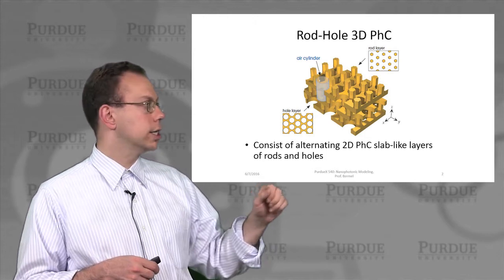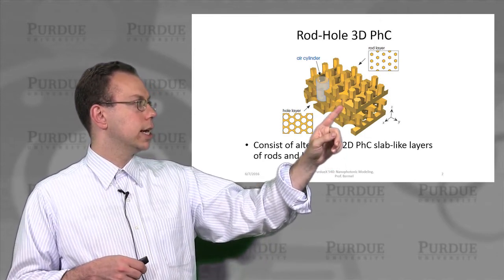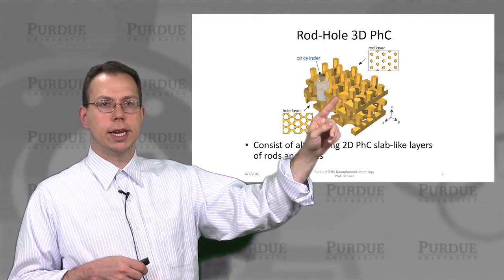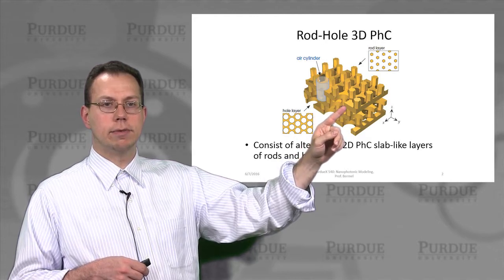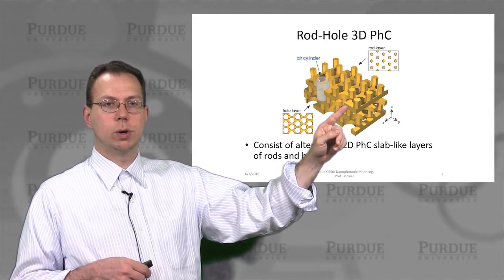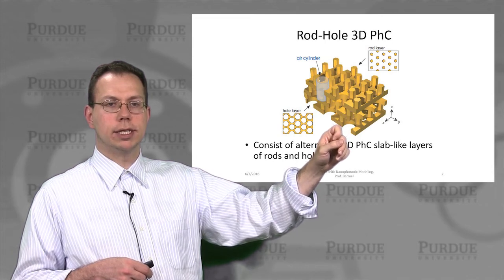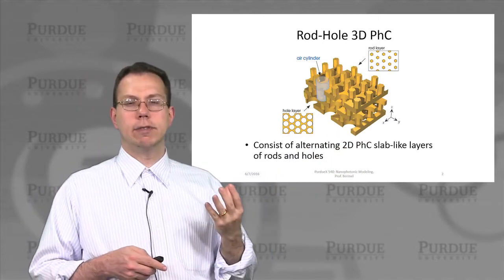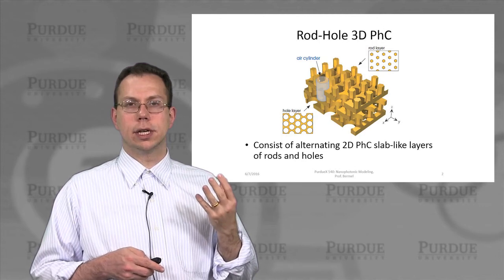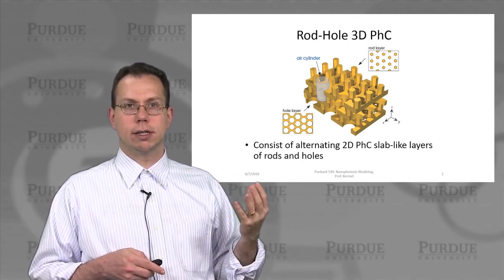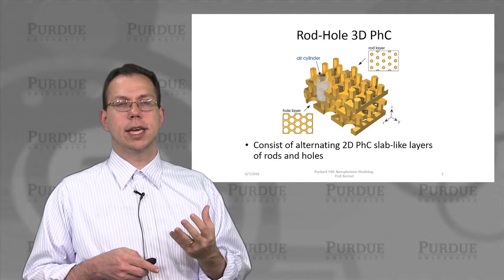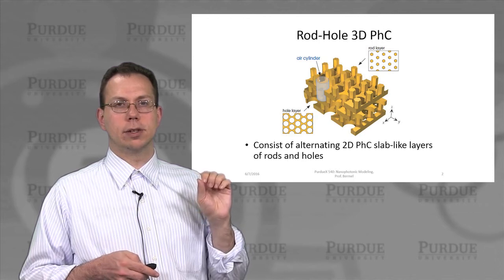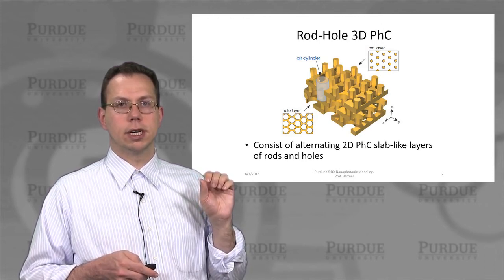Here's what it looks like. You can see it has alternating layers that look like 2D photonic crystals made out of a triangular lattice of rods, and then right below it a triangular lattice of holes. You alternate between rods and holes throughout the structure. If you build up many many layers, you can think of it as an analog to the woodpile structure from lecture 112, but in this case we have alternating 2D slab-type photonic crystals instead of just 1D periodic structures.